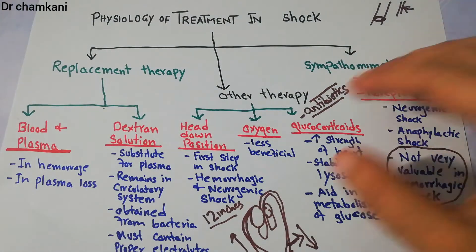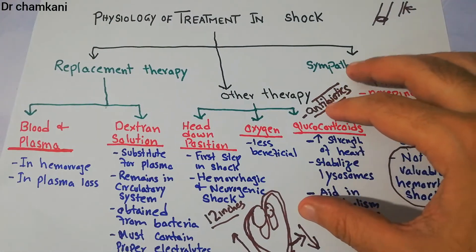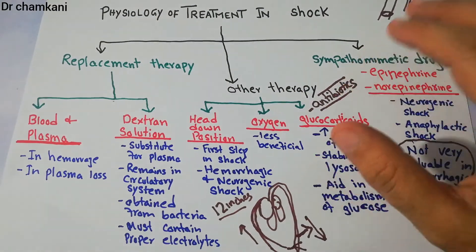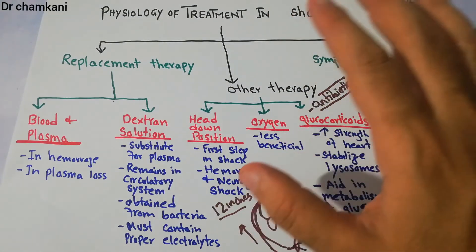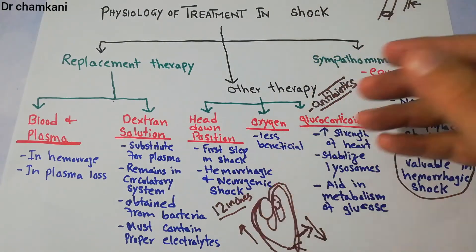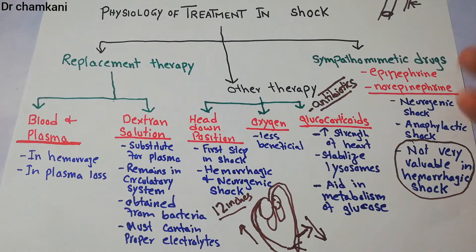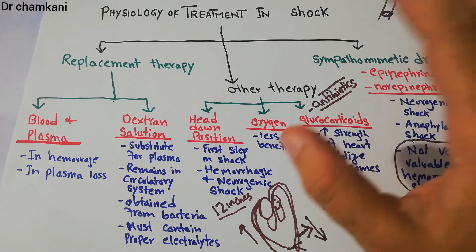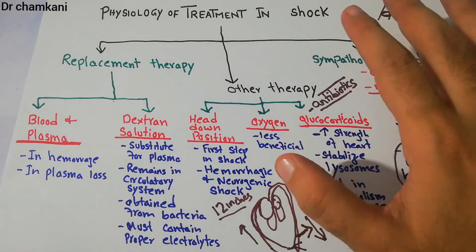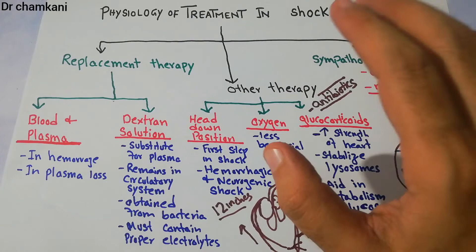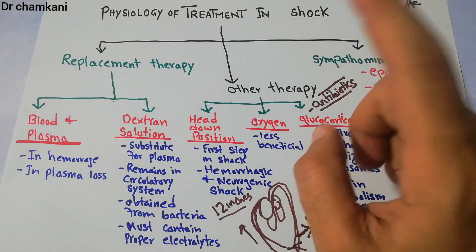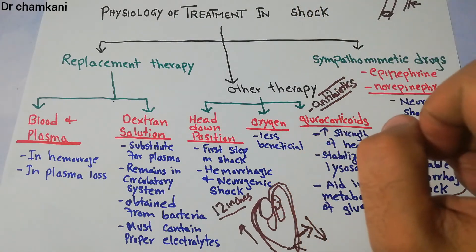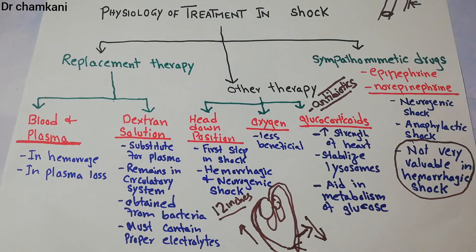There may be other treatment options as well, but these are the broad categories. That's all about shock — we have considered different types of shock, different stages of shock, and now concluded the lectures about circulatory shock with this lecture on the physiology of treatment in shock. Thanks a lot for watching.